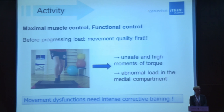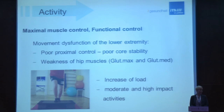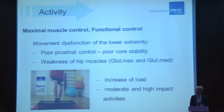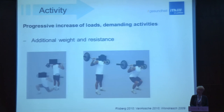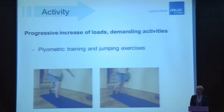Addressing movement dysfunction is really important for the cartilage tissue and for the patient. Poor proximal control and weak muscles contribute to poor movement quality, and you need to address this before increasing load. Then you can start resuming moderate and high impact activities, add resistance and weight, and implement plyometric training and jumping exercises based on the sport the patient is doing.